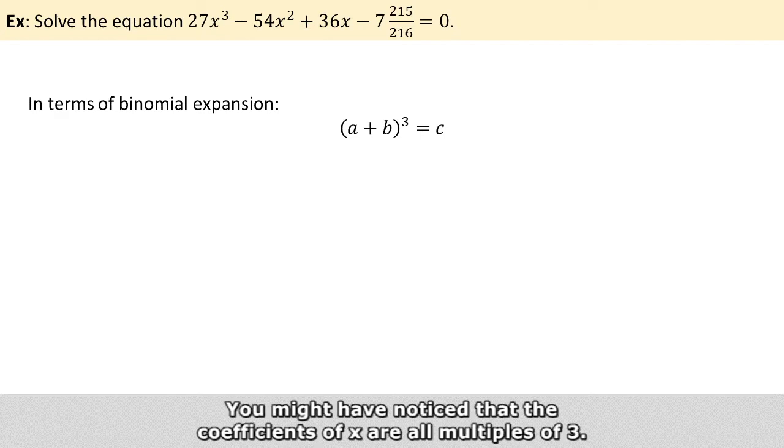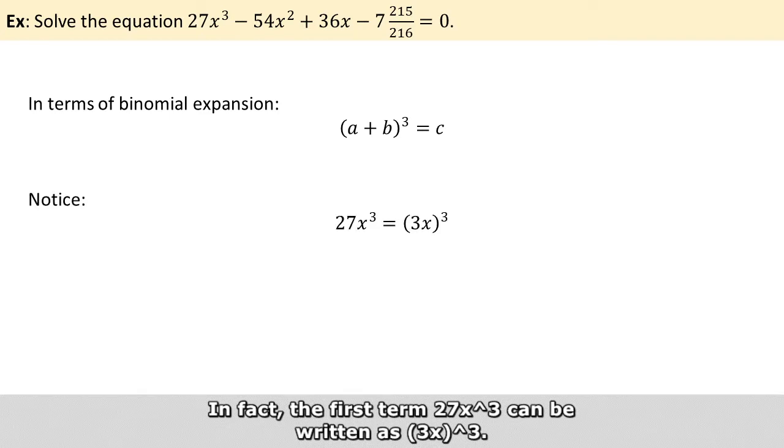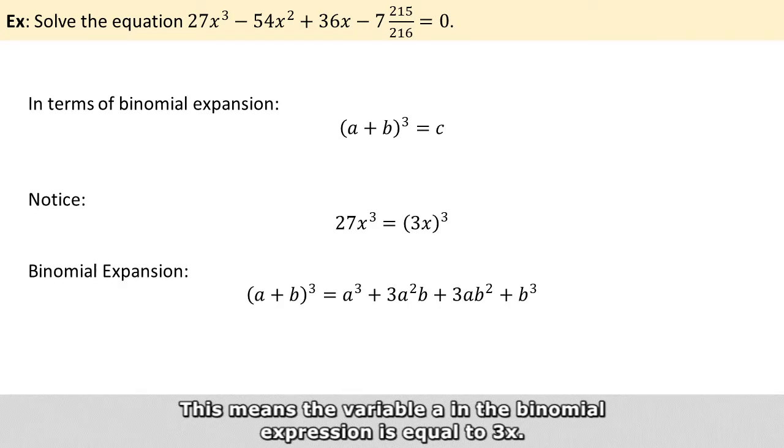You might have noticed that the coefficients of x are all multiples of 3. In fact, the first term, 27 times x cubed, can be written as 3x raised to the power of 3. This means the variable a in the binomial expression is equal to 3x.